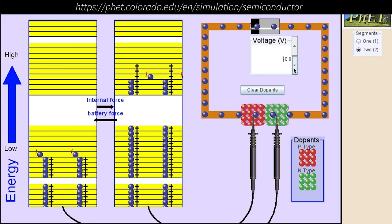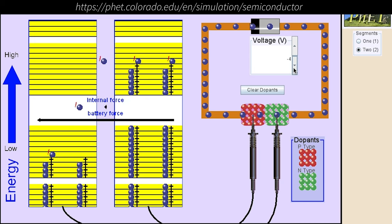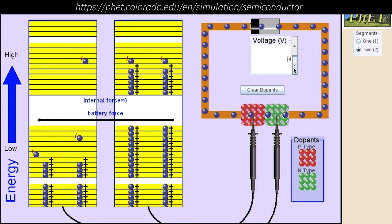Transistors, which allow you to actually switch electricity using an applied current, require putting several of these PN junctions together. We'll be studying, in particular, NPN bipolar junction transistors.